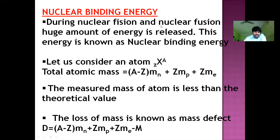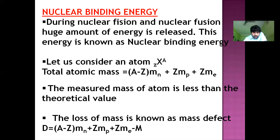During nuclear fission and fusion, a huge amount of energy is produced. This energy is known as nuclear binding energy. Now, we are considering an atom denoted as Z-X-A, where Z is known as the atomic number and A is known as the mass number.